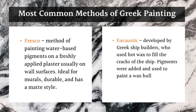Another method is encaustic, which was developed by Greek shipbuilders who used hot wax to fill the cracks of ships. Pigments were added and used to paint the wax hull. The key difference between encaustic and fresco is that fresco applies pigments to wet plaster, while in encaustic the binding element is wax rather than water.